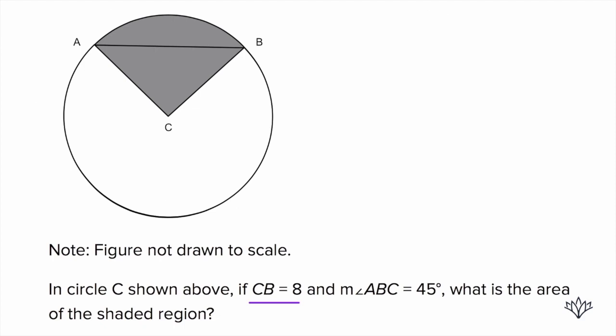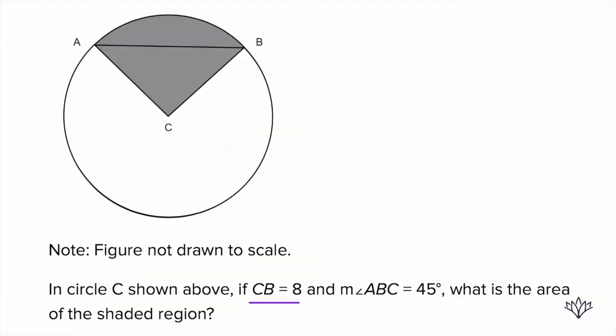We're going from C all the way out to the outside of the circle. Whenever we do that, what's that called? It's a radius. Now, what else do we see? CA also has to be what? A radius. So, we have 8 and 8.